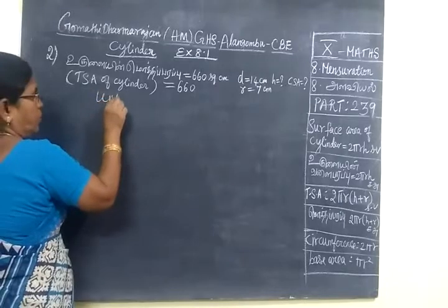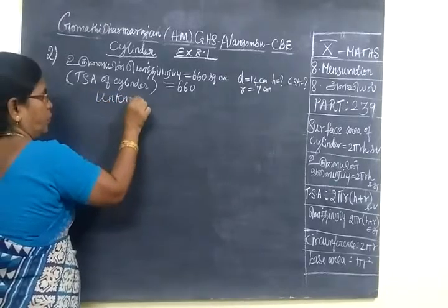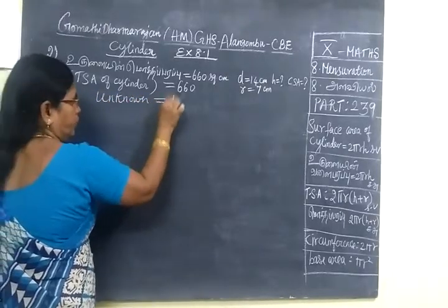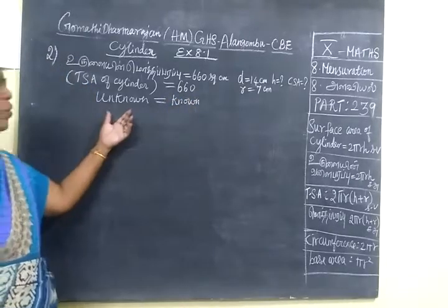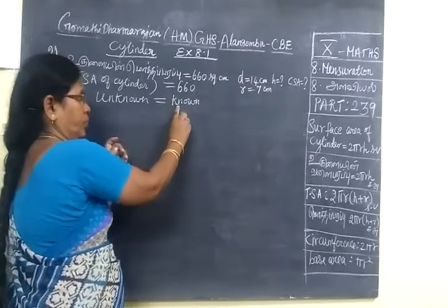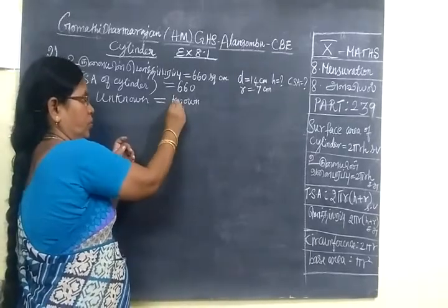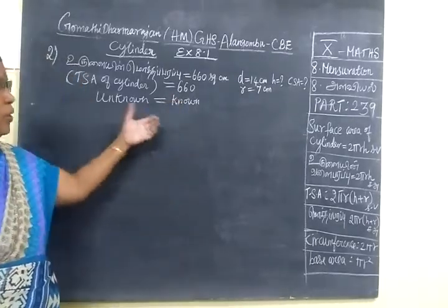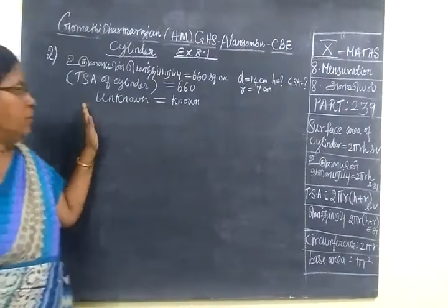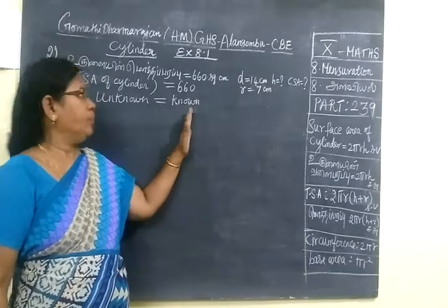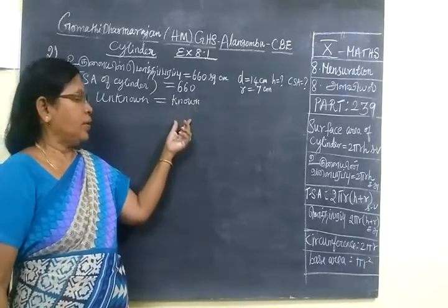Unknown equal to known. That means unknown equal to known. One step we use, it is easier. Unknown is what we don't know. It is one thing - what we know. It is one thing, the answer.